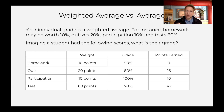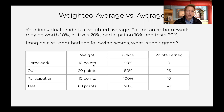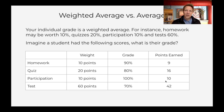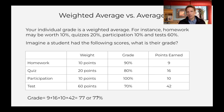Things are worth different amounts. So in this schema we put up here — feel free to edit this and make it your own — homework is worth 10% of the grade, quiz is 20%, participation 10%, and a test 60%. If you have a hypothetical student that got 90% on homework, 80% on the quiz, 100% on participation, 70% on the test — their overall grade would be 77%. So your grade is a weighted average.